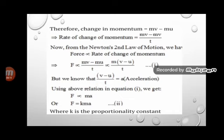Substituting into Newton's second law: force is proportional to (MV − MU) / T. Since M is common, take it out: M × (V − U) / T. We already know that change in velocity divided by time is acceleration, so instead of (V − U) / T, substitute acceleration A. Thus force is proportional to M × A.